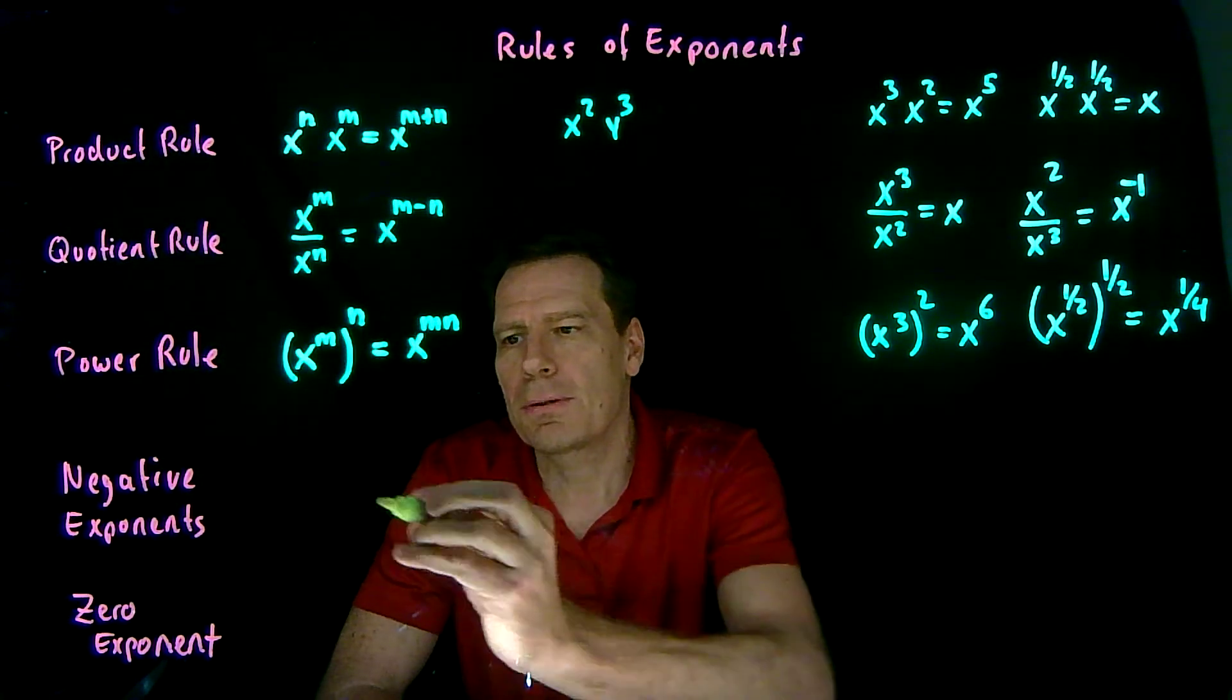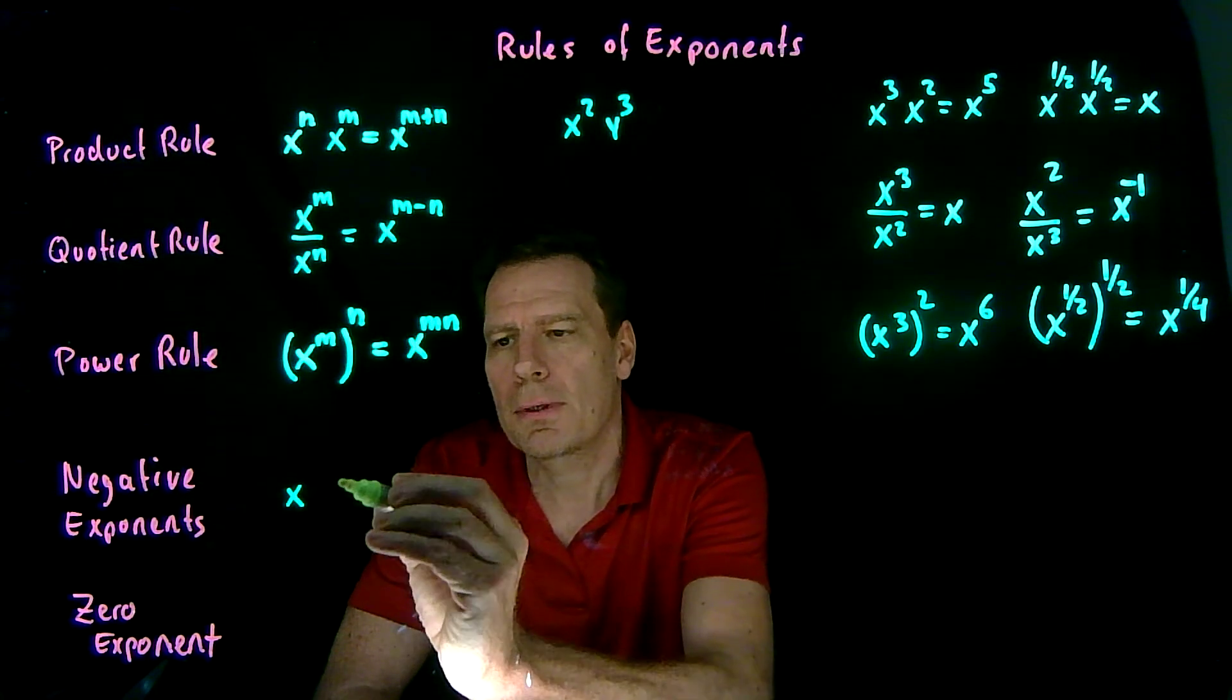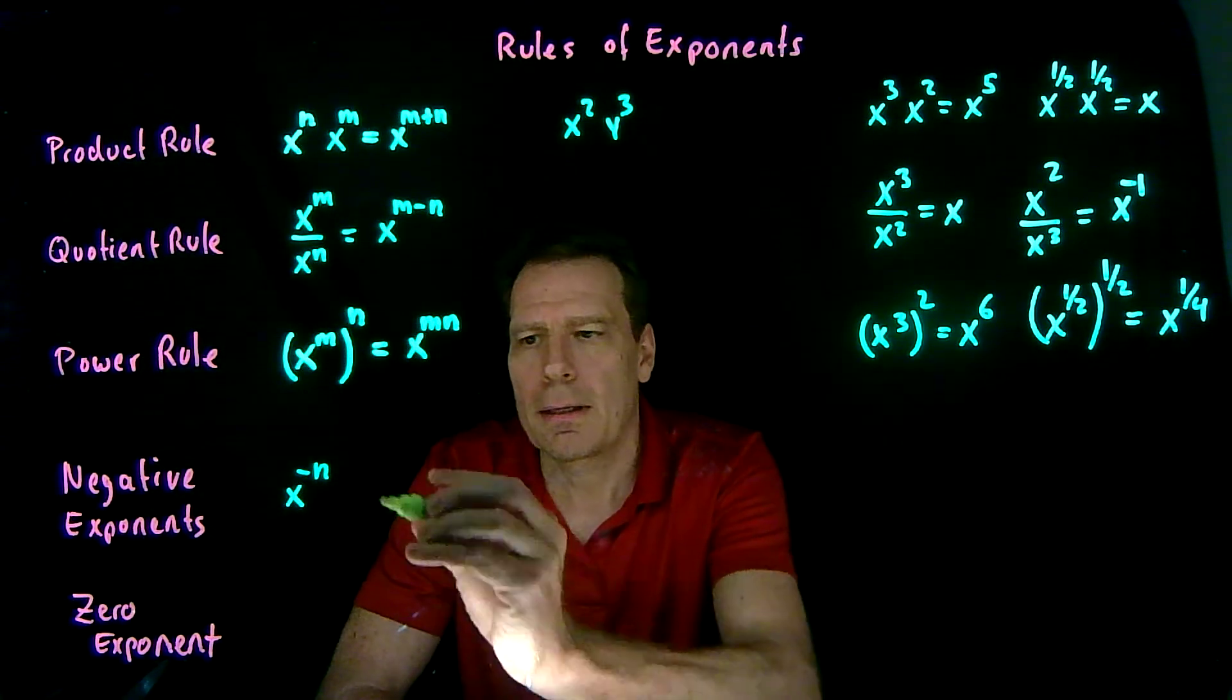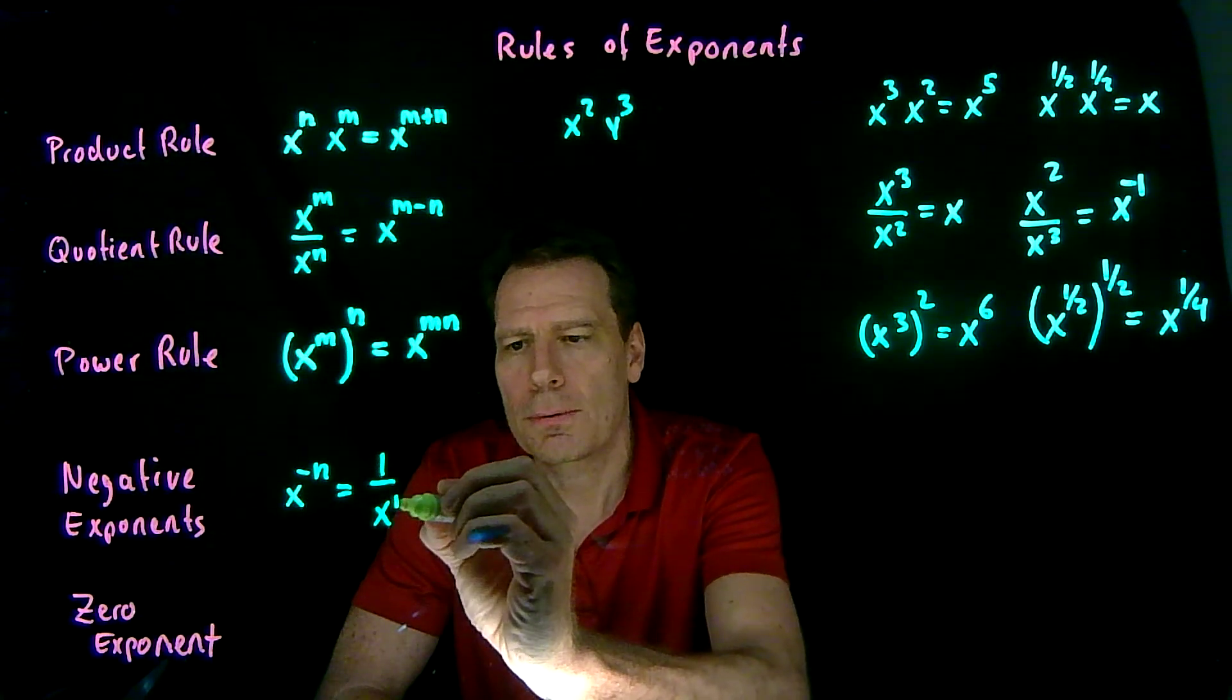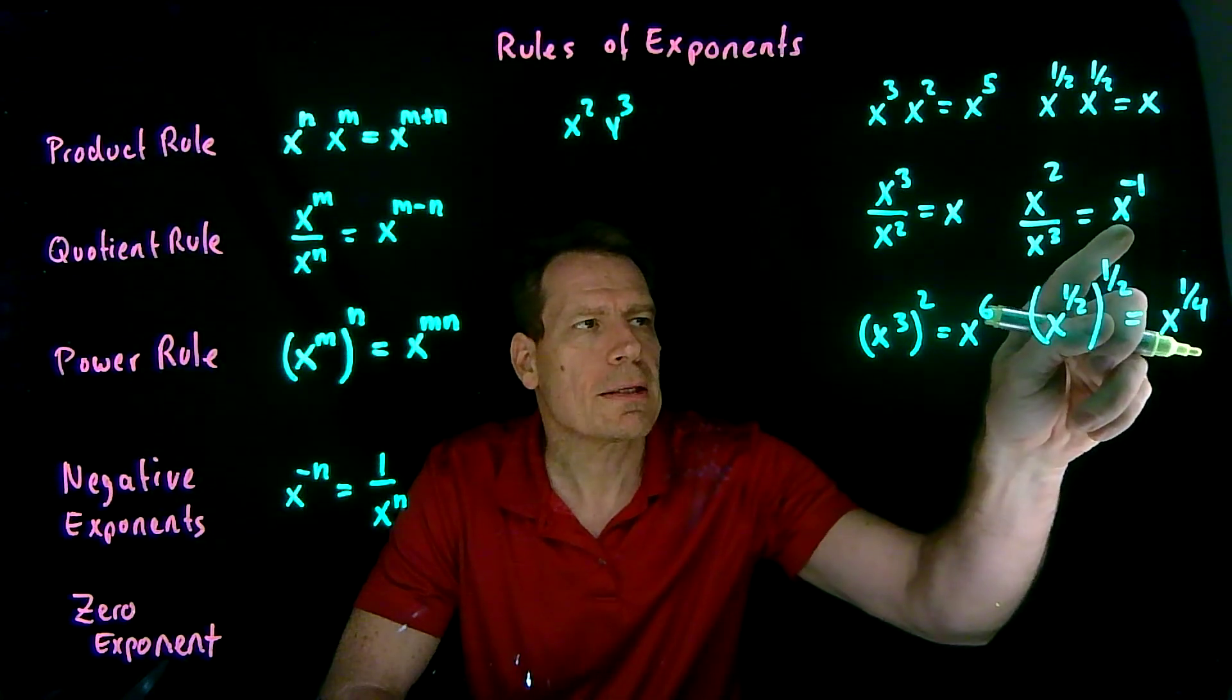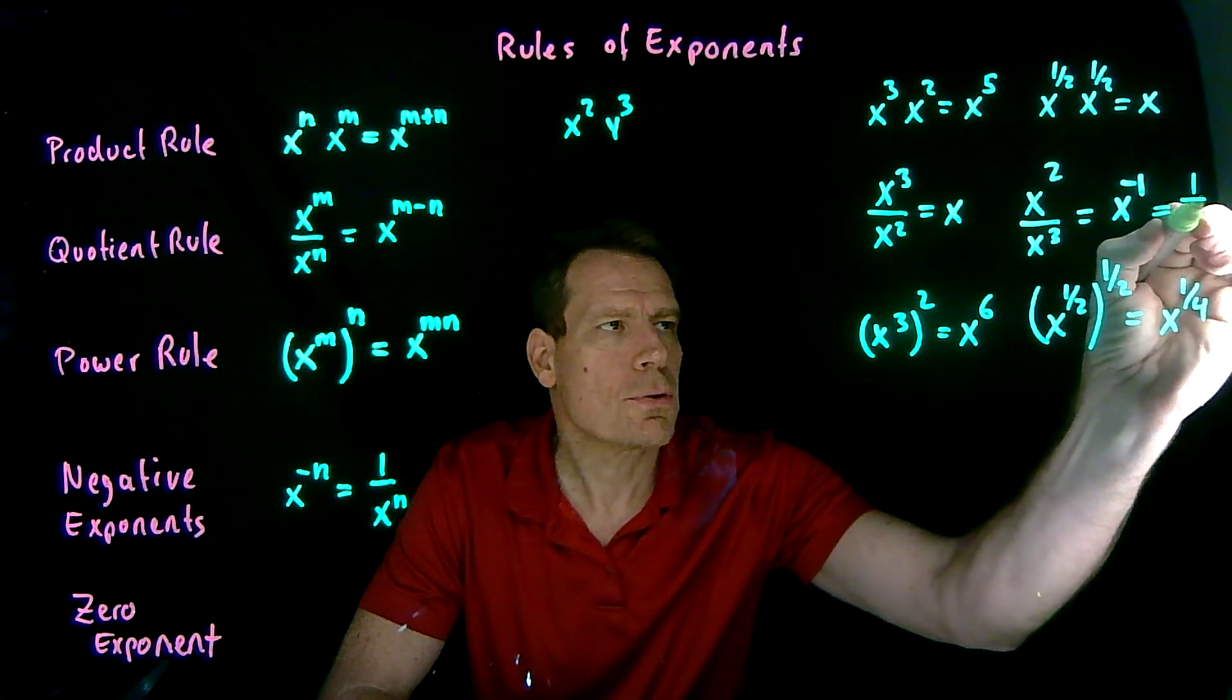Then we need to remember what a negative exponent means. So if you have x to the minus n, then that's the same as 1 over x to the n with no negative sign. So when we had an x to the minus 1 here, that's the same as 1 over x.